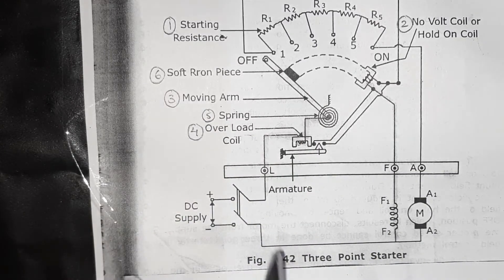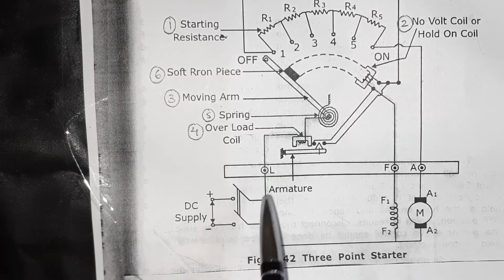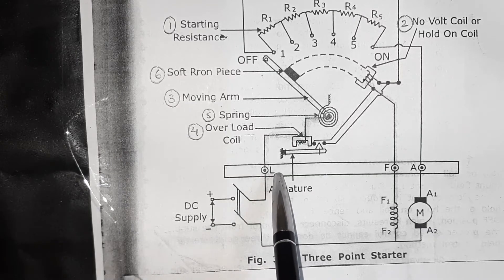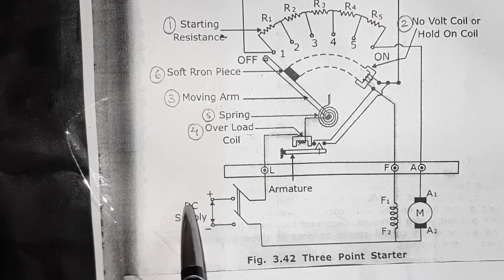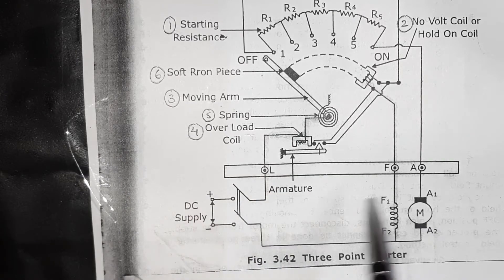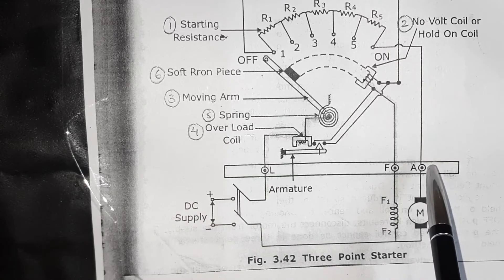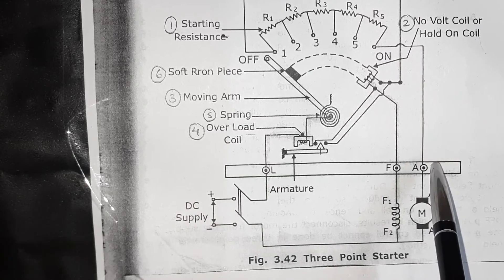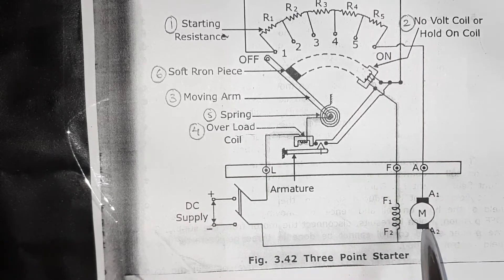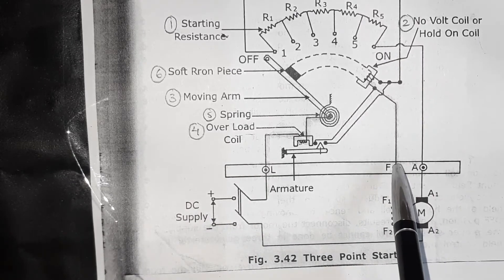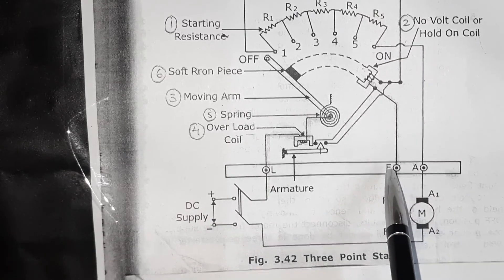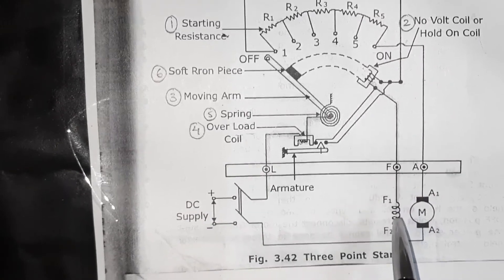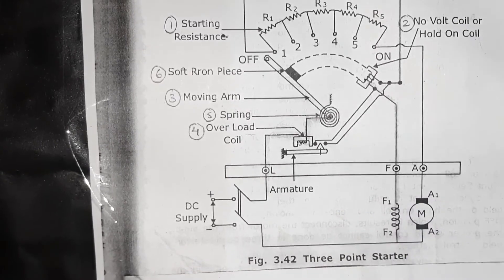There are three terminals: L (line), which is directly connected to the supply; A (armature), which is connected to the armature; and F (field), which is connected to the field winding.